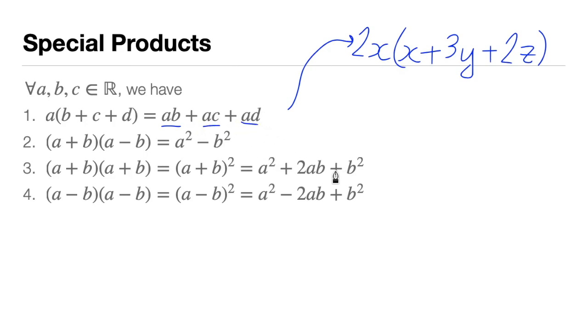We're going to follow the pattern: first term is ab, second is ac, third is ad. We're distributing the 2x. This becomes 2x times x, which equals 2x squared, since multiplying terms with the same base adds the exponents. Plus 2x times 3y: we multiply the coefficients, 2 times 3 is 6, then copy x and y to get 6xy.